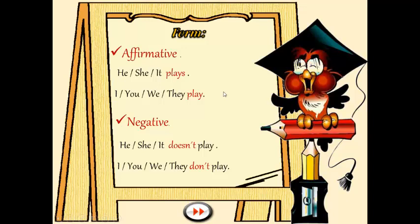Me detengo un poquito para aclarar una cosa. Acá estamos viendo cómo se conjuga el verbo con los pronombres personales. Ustedes los conocen muy bien, pero en una oración me puede aparecer el nombre de una persona, el nombre de un lugar o el nombre de un animal, de un objeto. Entonces tengo que leer bien la oración para saber si voy a colocar el verbo con S o sin S. Es clave leer bien la oración en su forma completa para saber de quién estoy hablando, o sea, para saber cuál es el sujeto de la oración.